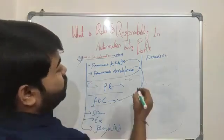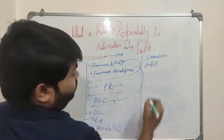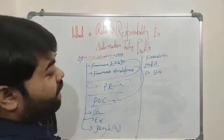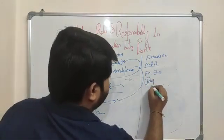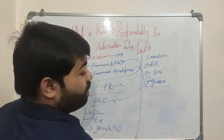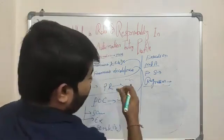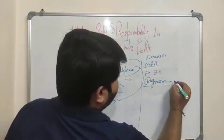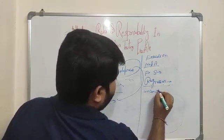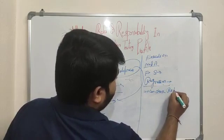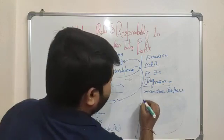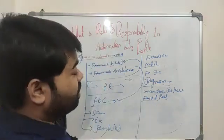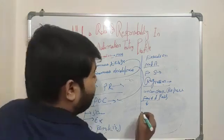Another scenario is when you are handling both manual and automation. In this case, the framework is already developed and script development is already completed. Here we are doing regression. Whenever there is a change, we run the regression suite. Whatever automation suite we have, once we run it, we can check the report. In the report you will get failed and passed results.